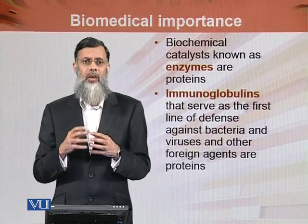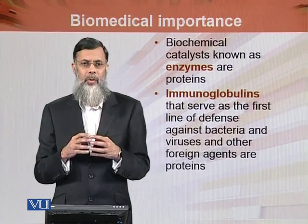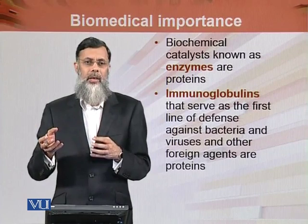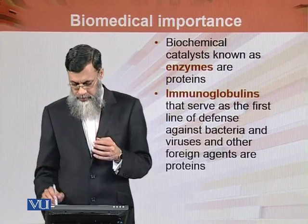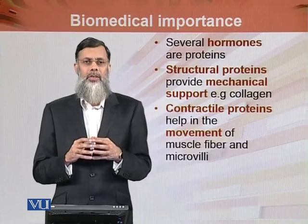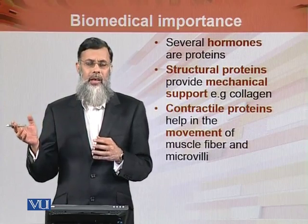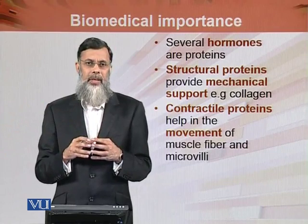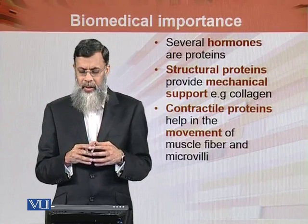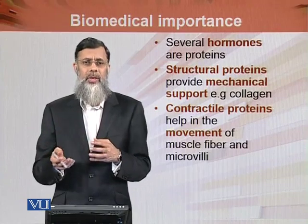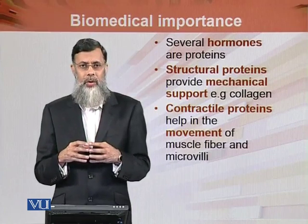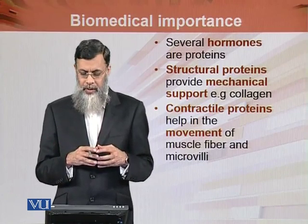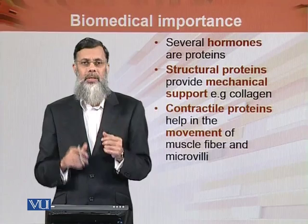Immunoglobulins are also of different types, having multiple types of proteins in a particular immunoglobulin molecule because there are different types of antigens. Different viruses and hormones also act as different proteins. Hormones are produced in an organ away from the site of their action — like insulin produced in the pancreas. Structural proteins provide mechanical support, such as collagen and elastin, and contractile proteins like microvilli, myofibrils, and muscle fibers are also proteins that work in contraction.